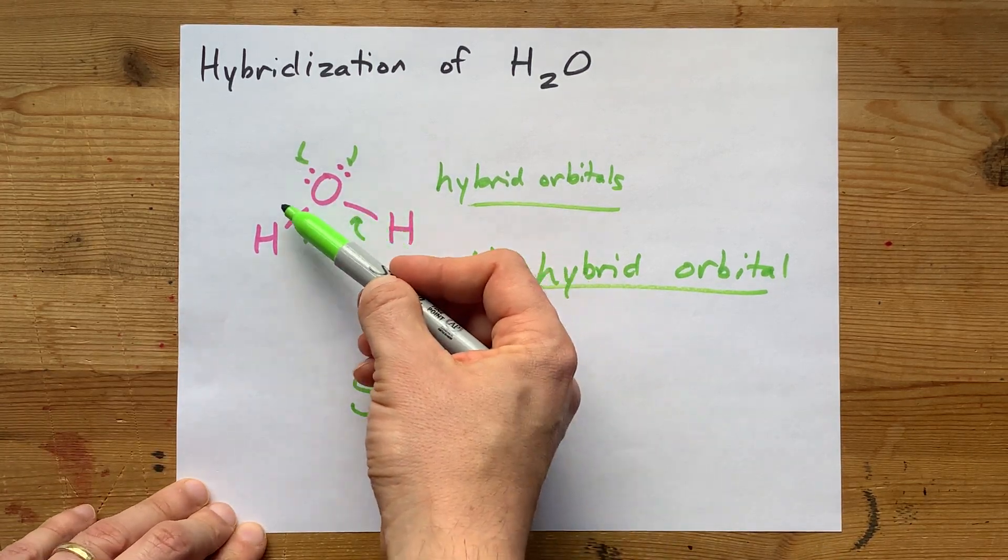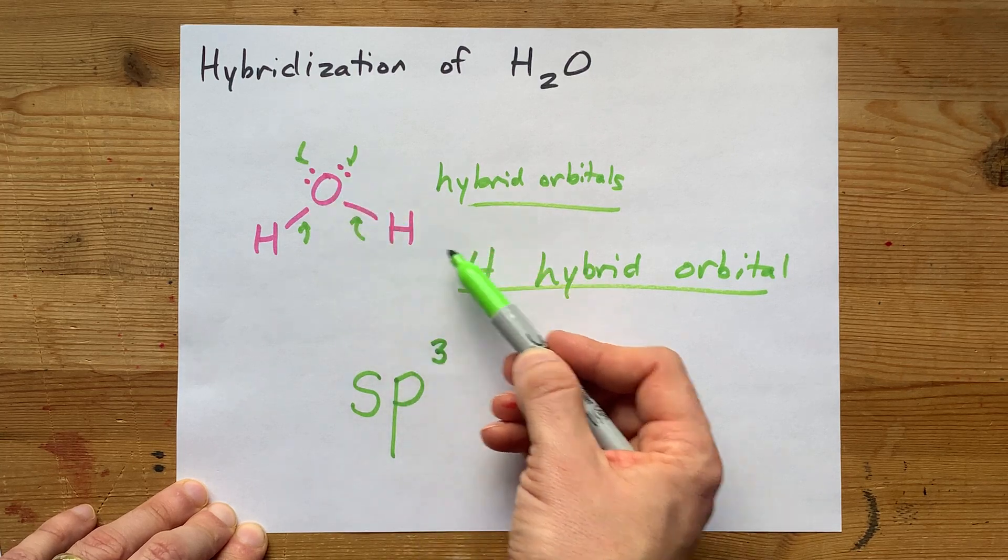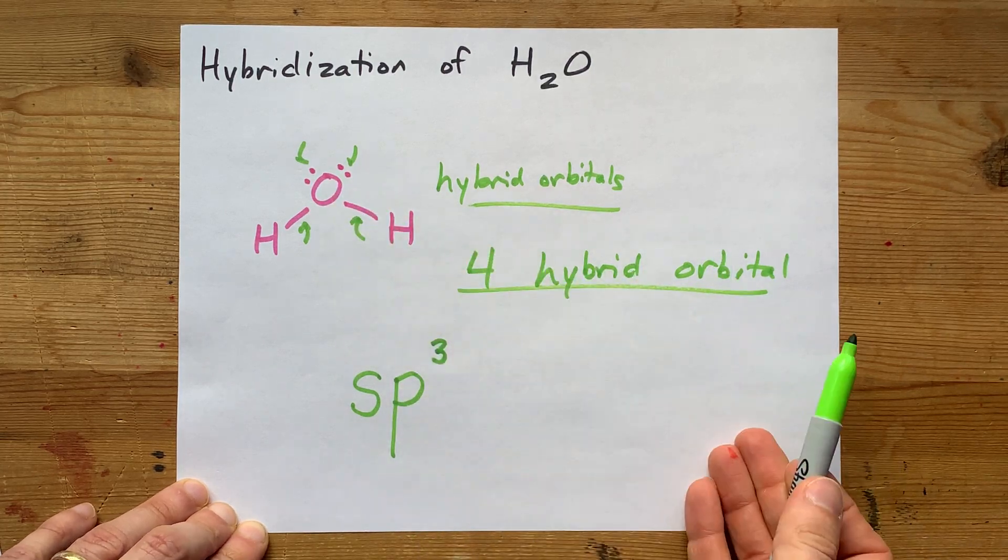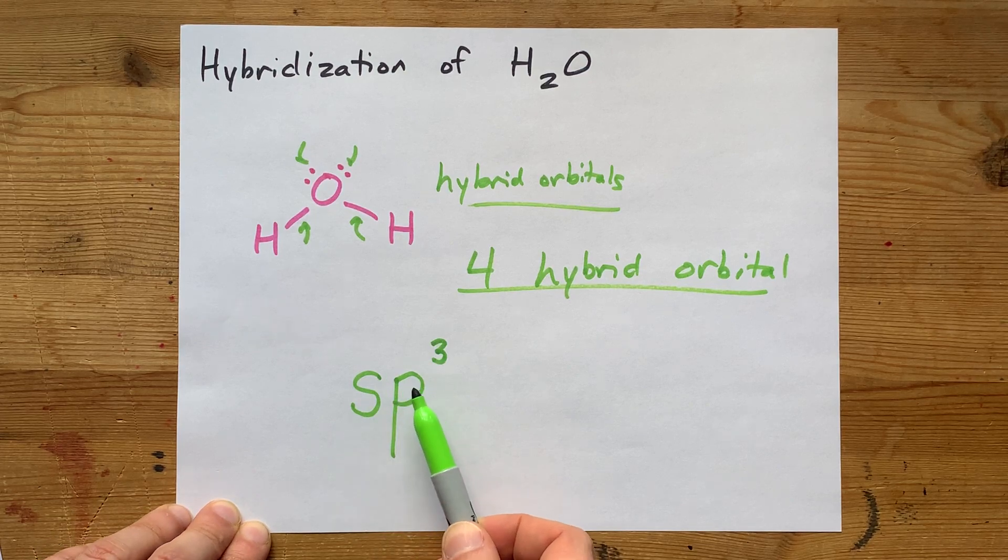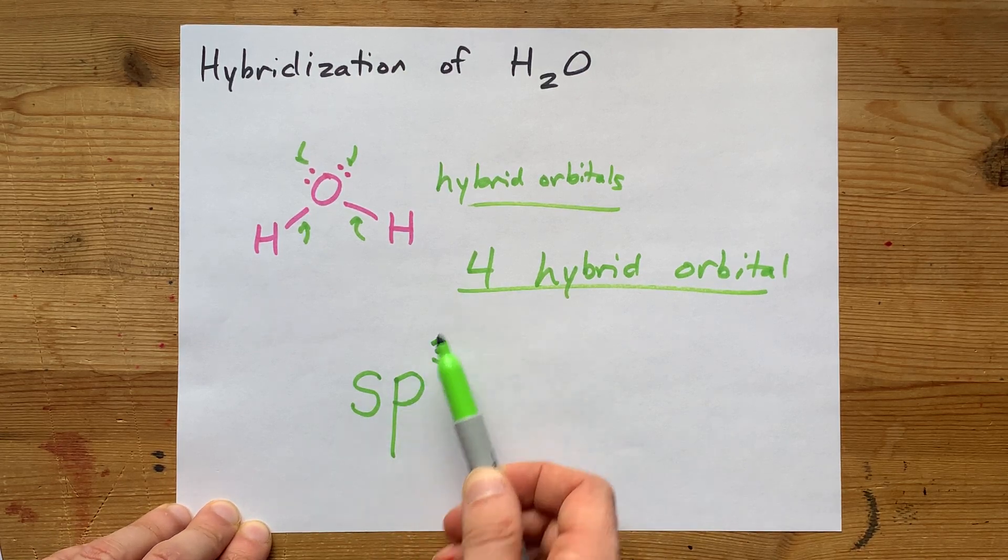Number of sigma bonds and lone pairs around that atom tell you how many hybridized orbitals you need, and then you hybridize the S along with as many P's as you need to count up to that total.